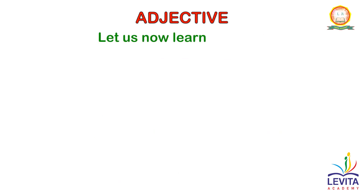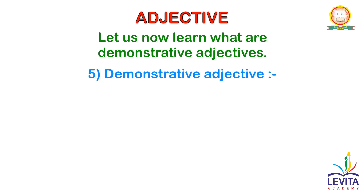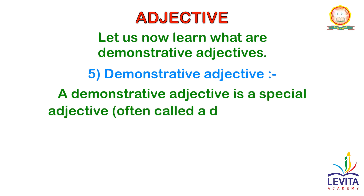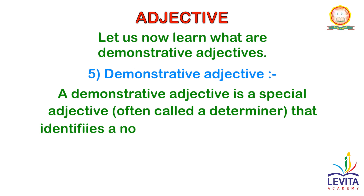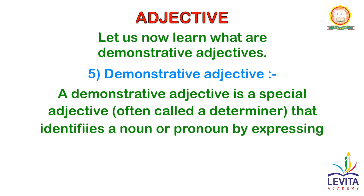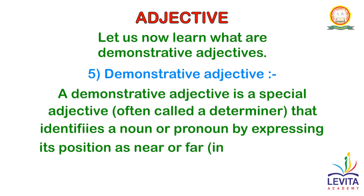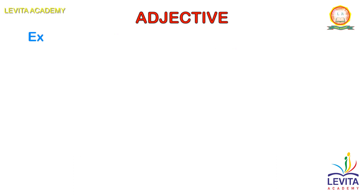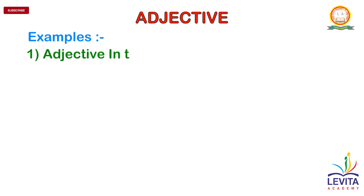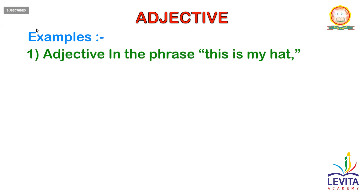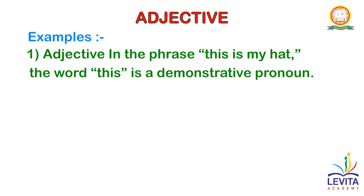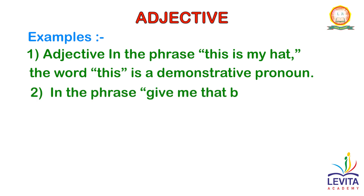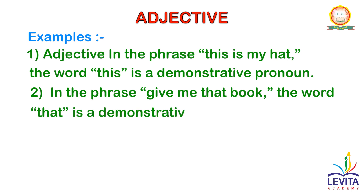Let us now learn what demonstrative adjectives are. A demonstrative adjective is a special adjective, often called a determiner, that identifies a noun or a pronoun by expressing its position as near or far, including in time. For example, in the phrase this is my hat, the word this is a demonstrative adjective. In the phrase give me that book, the word that is a demonstrative adjective.